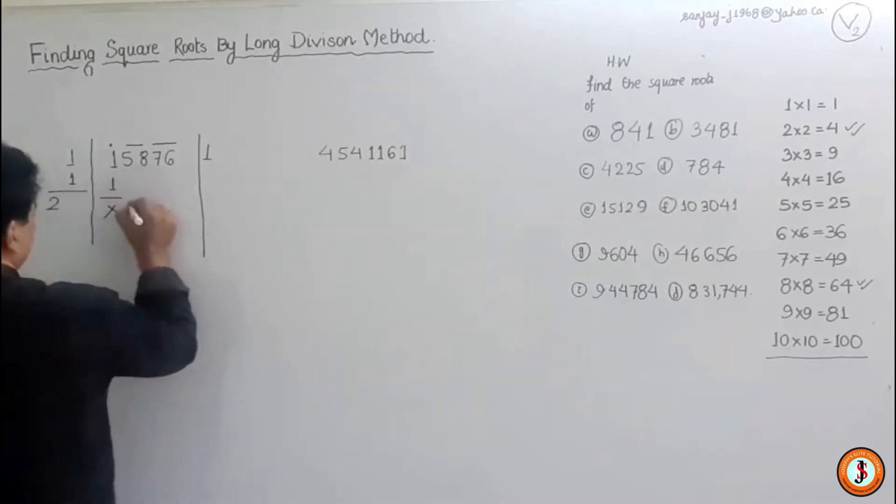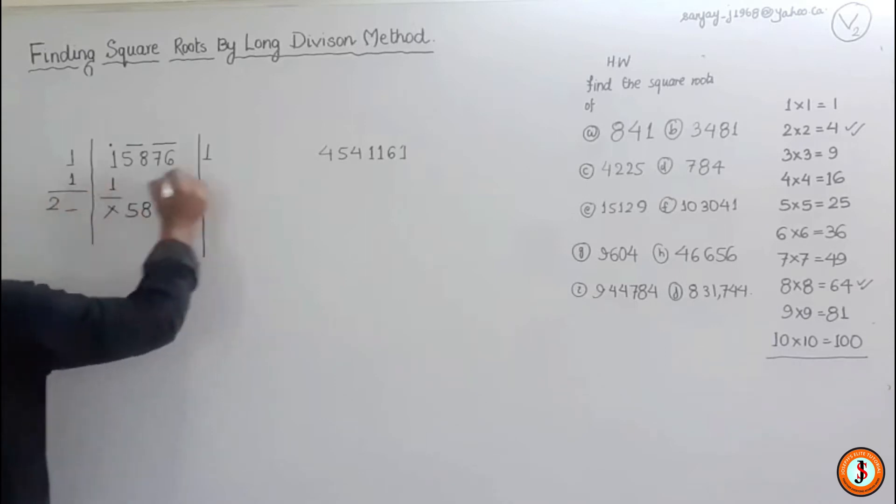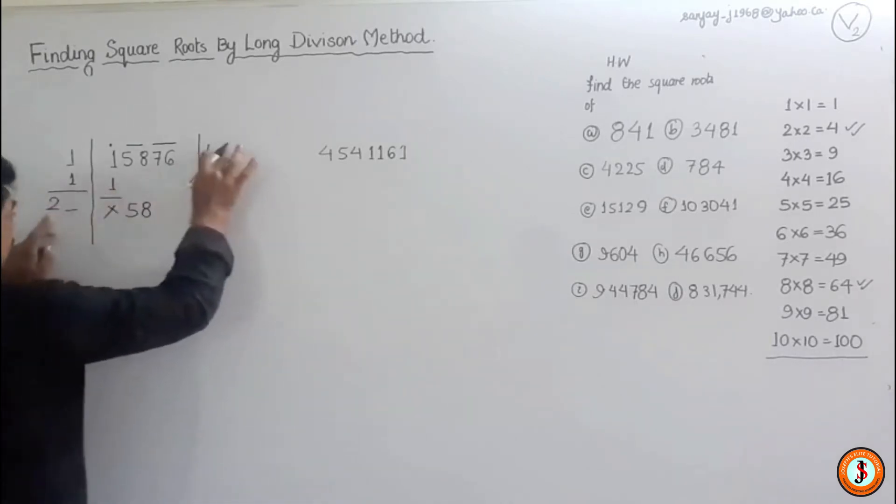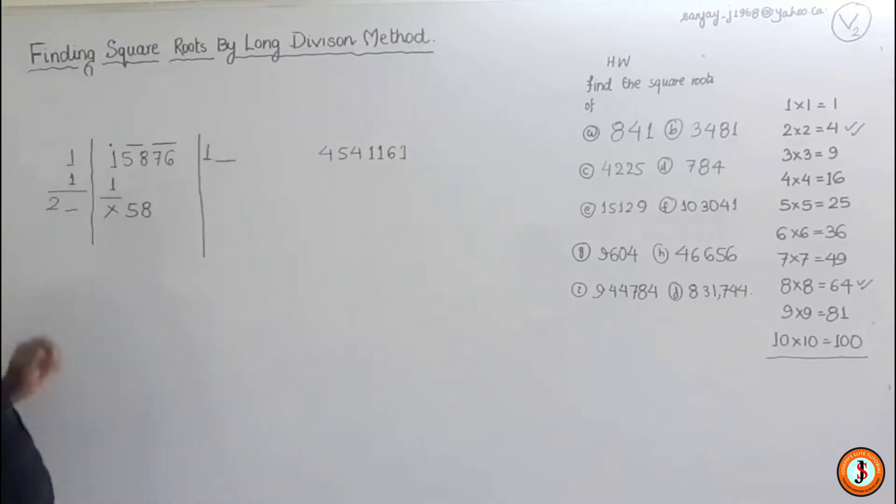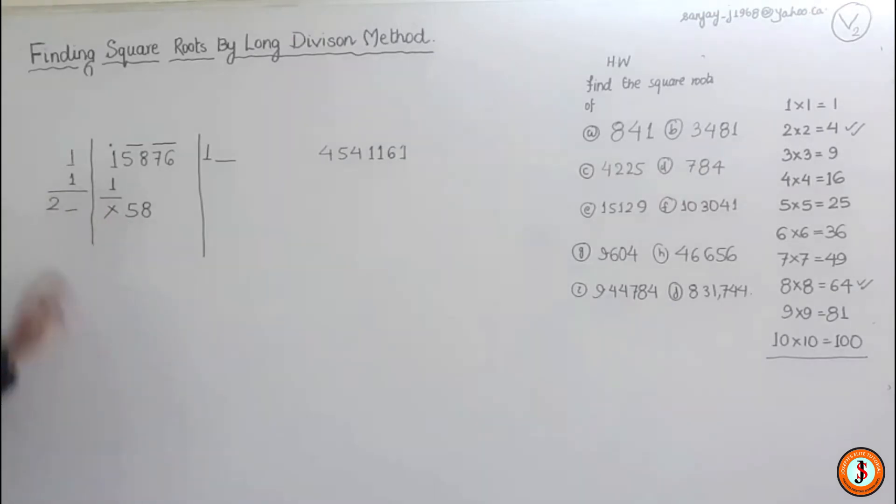So now I have to put a number here. Multiplying this number obtained with the number here, the single number there or the same number here. Suppose I put two over here. Two times two is four. Twenty-two times two is forty-four. It doesn't go. Twenty-three times three is sixty-nine. So we have to go with twenty-two.